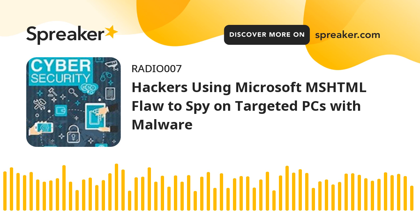The phishing campaign, which began in July 2021, involved the exploitation of CVE-2021-40444, a remote code execution flaw that could be exploited using specially crafted Microsoft Office documents. The vulnerability was patched by Microsoft in September 2021, weeks after reports of active exploitation emerged in the wild.